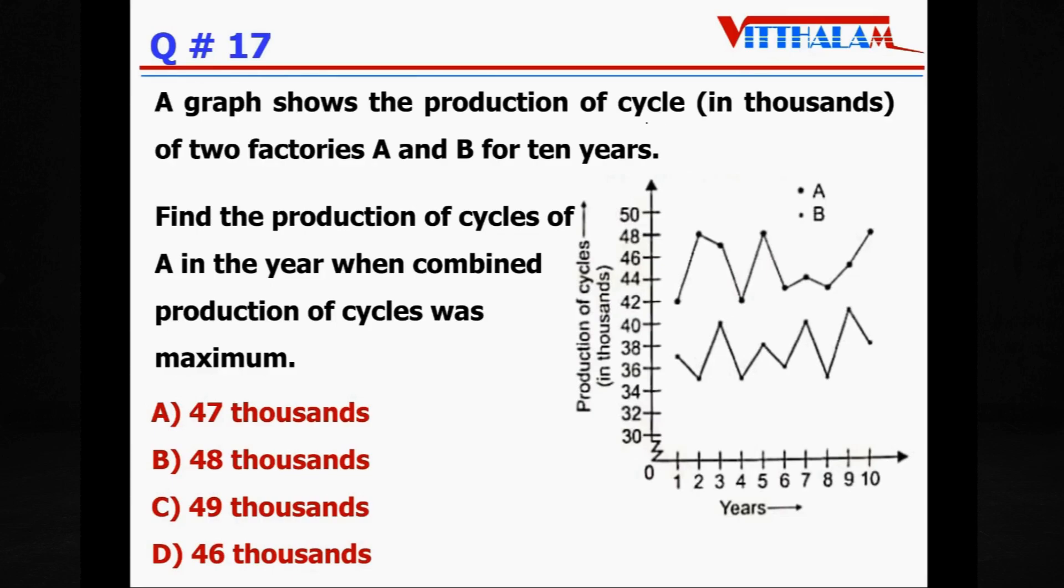Next. The graph shows the production of cycles in thousands of two factories A and B. So this is for A and this is for B, for 10 years. X-axis is years, here is productions. Find the production of cycles of A in the year when combined production of cycles was maximum.